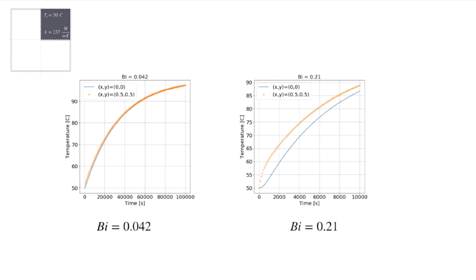Whereas when we increase the Biot number to 0.21, the corner temperature heats up very quickly, and there's a delay as energy has to propagate inside towards that center. And then you see a large difference between these two curves all the way up to our latest time in this simulation.